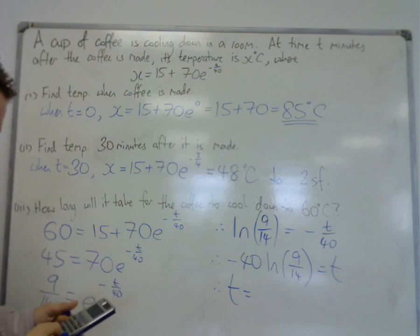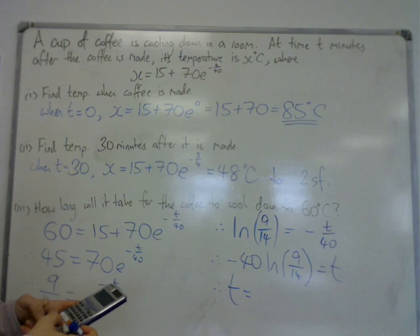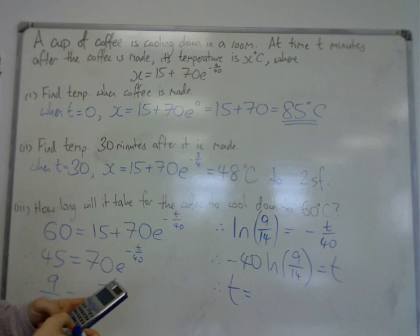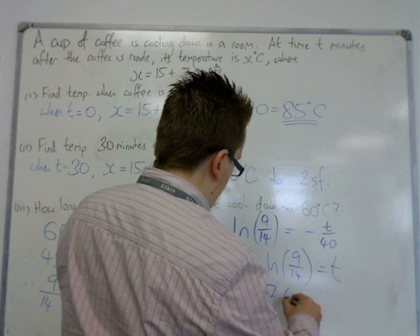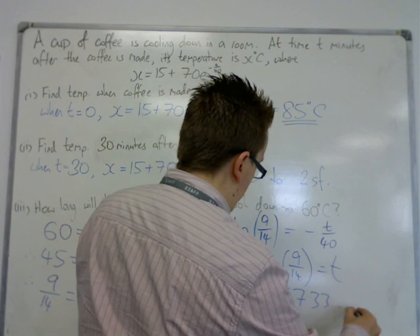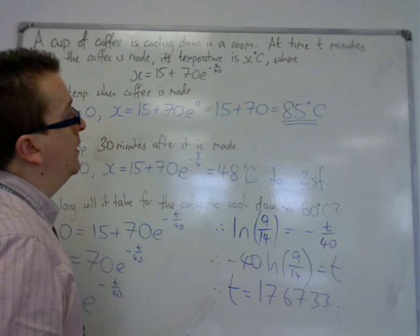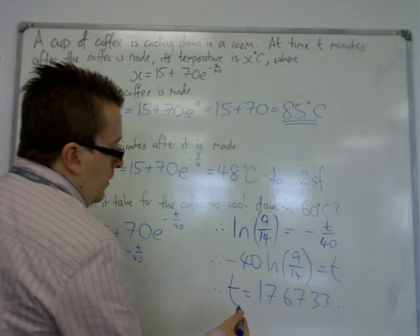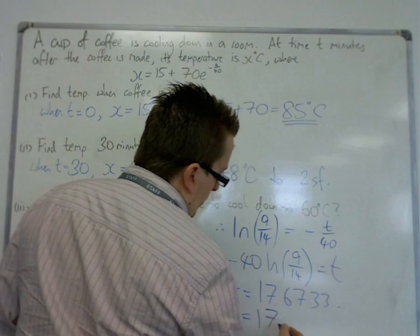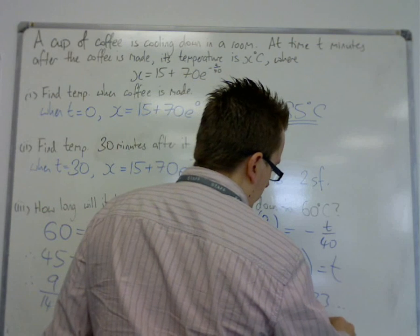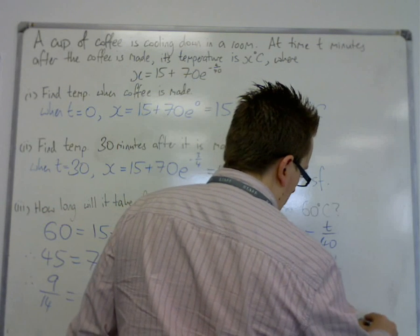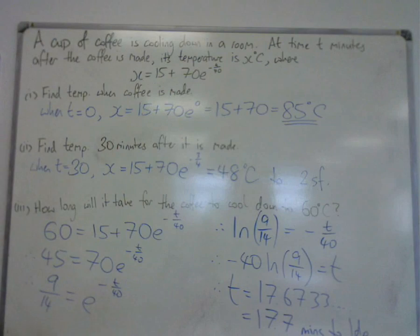Plug that straight into the calculator. Minus 40 times log of 9 fourteenths is 17.6733. I'll put it to one decimal place: 17.7 minutes.